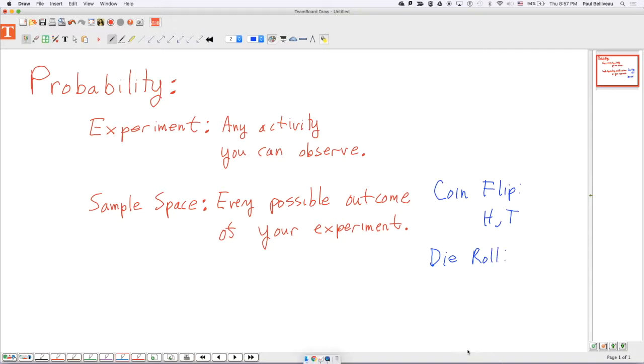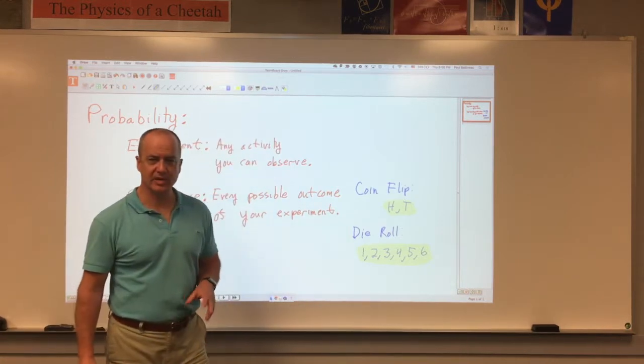For a single die roll, thinking of a single six-sided die, the sample space is the number that we see on the top of the die after we roll it. These are the lists of our sample space for these experiments, for these activities.